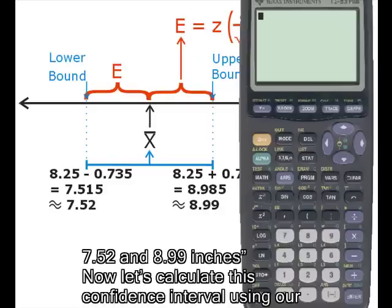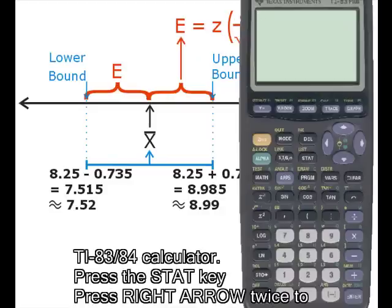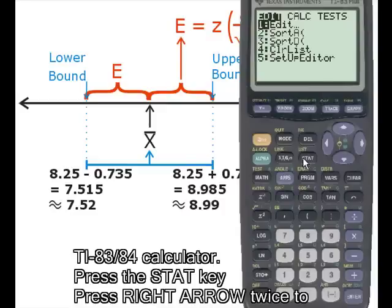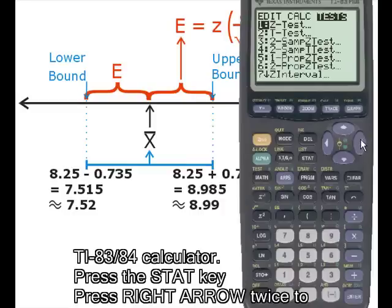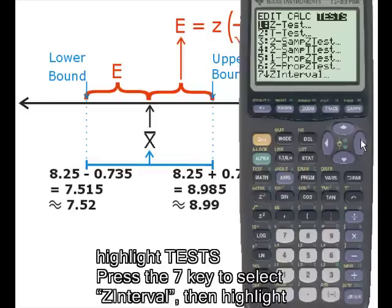Now let's calculate this confidence interval using our TI-83/84 calculator. Press the STAT key, press the right arrow key twice to highlight TESTS. Press the 7 key to select Z interval.